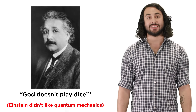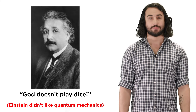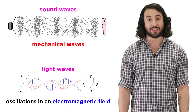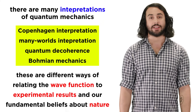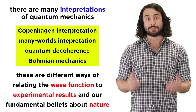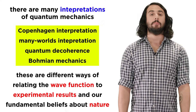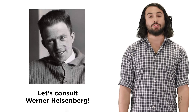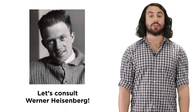This idea that nature is probabilistic on the most fundamental level was a lot for the scientific community to handle at the time, and still is for some. So just as sound waves are mechanical waves and light waves are oscillations in an electromagnetic field, an electron can be considered a cloud of probability density. There are many interpretations of quantum mechanics, which involve different ways of viewing the relationship between the wave function, experimental results, and the nature of reality, and there is still no firm consensus as to which view is correct — be it the Copenhagen interpretation, many worlds interpretation, or a number of others. But before you choose a camp, let's keep moving through the development of quantum mechanics, which means we will need to consult Werner Heisenberg.